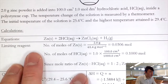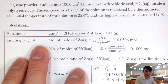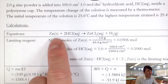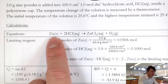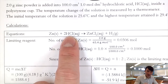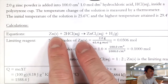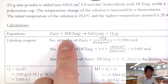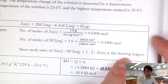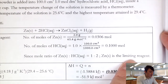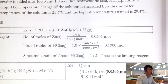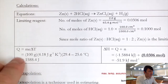Before calculating the heat change, we need to determine the limiting reagent because the mole ratio is not one-to-one — in this case it is one-to-two. So we start by writing a balanced chemical equation, then use all the given information to calculate the number of moles of each reagent. It turns out that zinc is the limiting reagent, and we will use it to perform our calculation of enthalpy change.